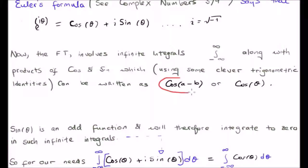So, a moment ago, we saw that we were able to rewrite the products and sums of cosine and sine as a single cosine, which, of course, is inside our infinite integral.